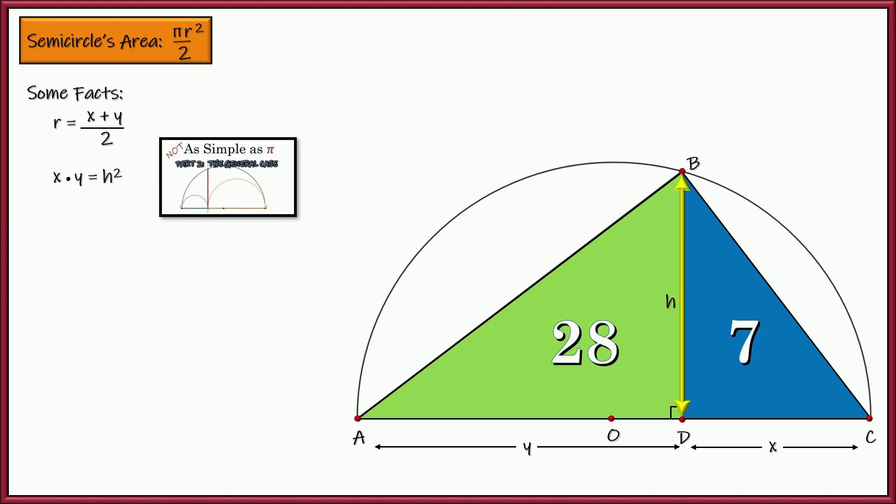And I also know that x times y is going to be equal to h squared. And if you're not sure how that works, I will leave a link in the description where I derive that formula from a similar problem. All right, now we also have some areas of triangles right here. So one half base times height is the area of a triangle. So one half x times h is seven. And one half y times h is 28.